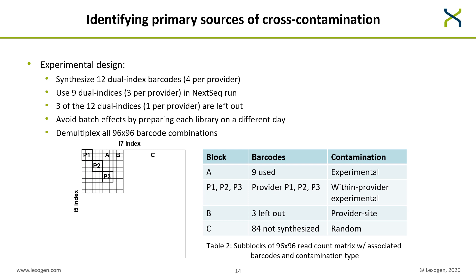The columns of this matrix are indexed by the I7 index and the rows by the I5 index. Different areas inside this matrix correspond to different types of cross-contamination. Block A corresponds to the nine barcodes used in the experiment, so the off-diagonal elements in A correspond to experimental cross-contamination. Blocks P1, P2, and P3 contain the barcodes for each provider, so within-provider experimental cross-contamination is reflected by their off-diagonal elements. Block B corresponds to the three left-out barcodes and reflects provider-site-dependent cross-contamination. The large area C contains the 84 non-synthesized barcodes and reflects random cross-contamination.